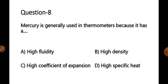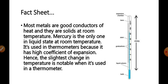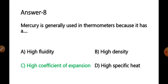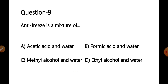Question 8: Mercury is generally used in thermometers because it has — options: A) high fluidity, B) high density, C) high coefficient of expansion, D) high specific heat. Most metals are good conductors of heat but are solid at room temperature. Mercury is the only metal in liquid state at room temperature, and it is used in thermometers because it has a high coefficient of expansion, so even the slightest temperature change is notable. The correct answer is option C.